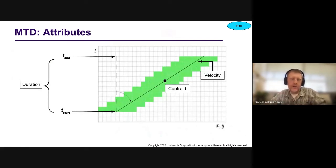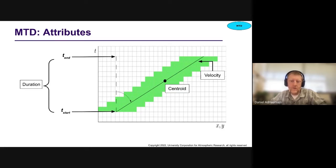When you define these objects in MTD, you can obtain attributes about them just like MODE. Here are three attributes to point out. You have this object — the green shaded area — evolving through time. The duration is simply the time end minus the time start. You can also obtain the centroid of the object in 3D X, Y, T space, as well as a velocity, which is done by fitting a line through the center of the object.